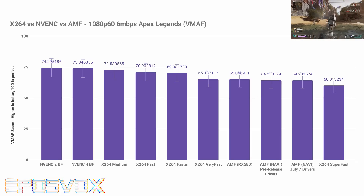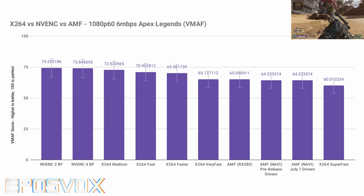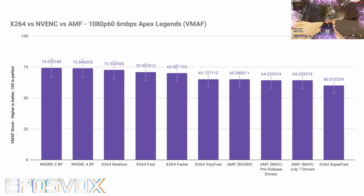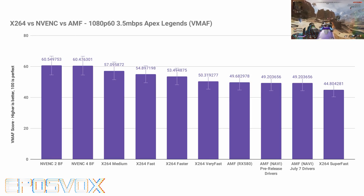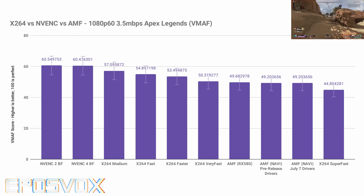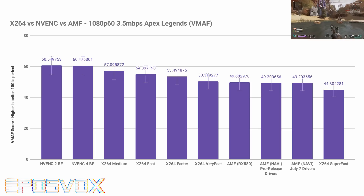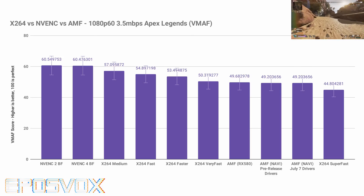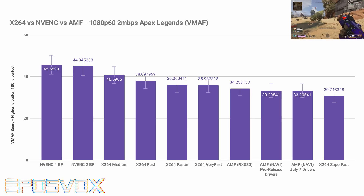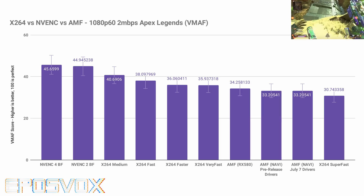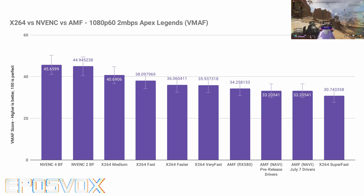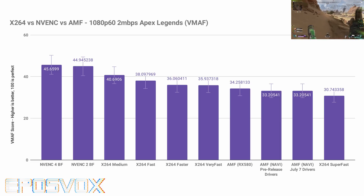Running through the numbers for the Navi graphics card — I tested both with pre-release drivers and July 7th drivers — both the SSIM and VMAF scores are exactly identical digit for digit, so nothing has changed with the new drivers. Out of all the testing — X264 Superfast through Medium, NVENC with two and four B-frames, AMF on the RX 580 and AMF on the 5700 — at all bitrates, AMF is pretty much the lowest quality except for X264 Superfast. It does beat Superfast, but that's it. It doesn't beat Veryfast. For the 5700 at 2 Mbps, VMAF scores 33.2 versus Veryfast's 35.9 and Superfast's 30.